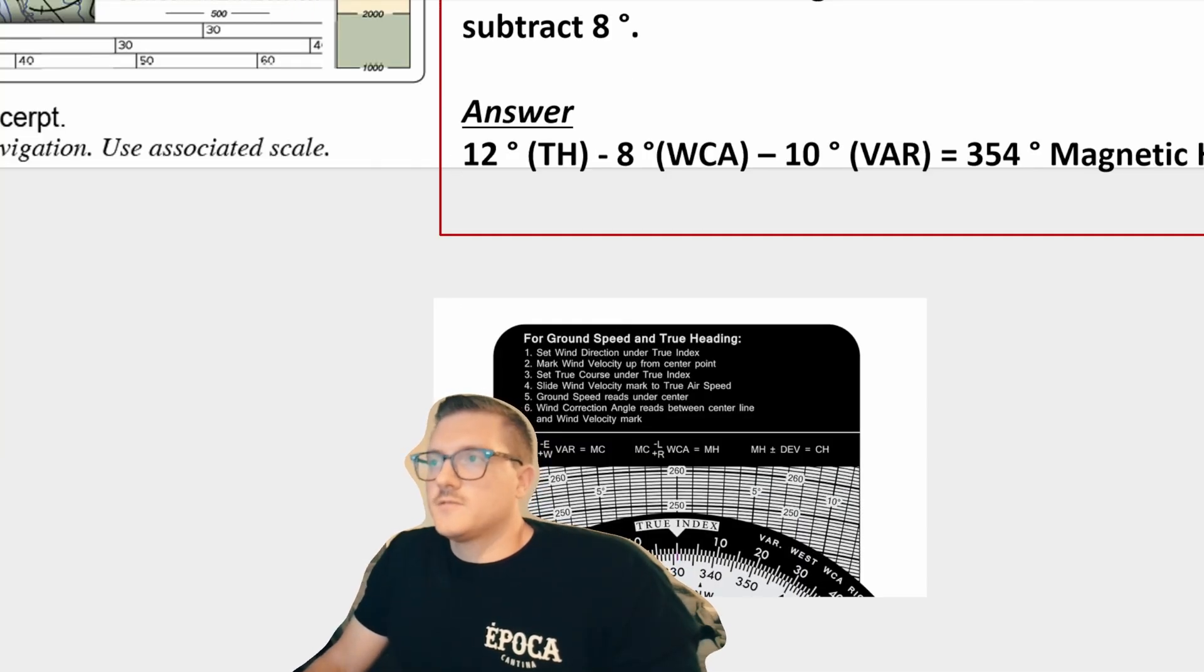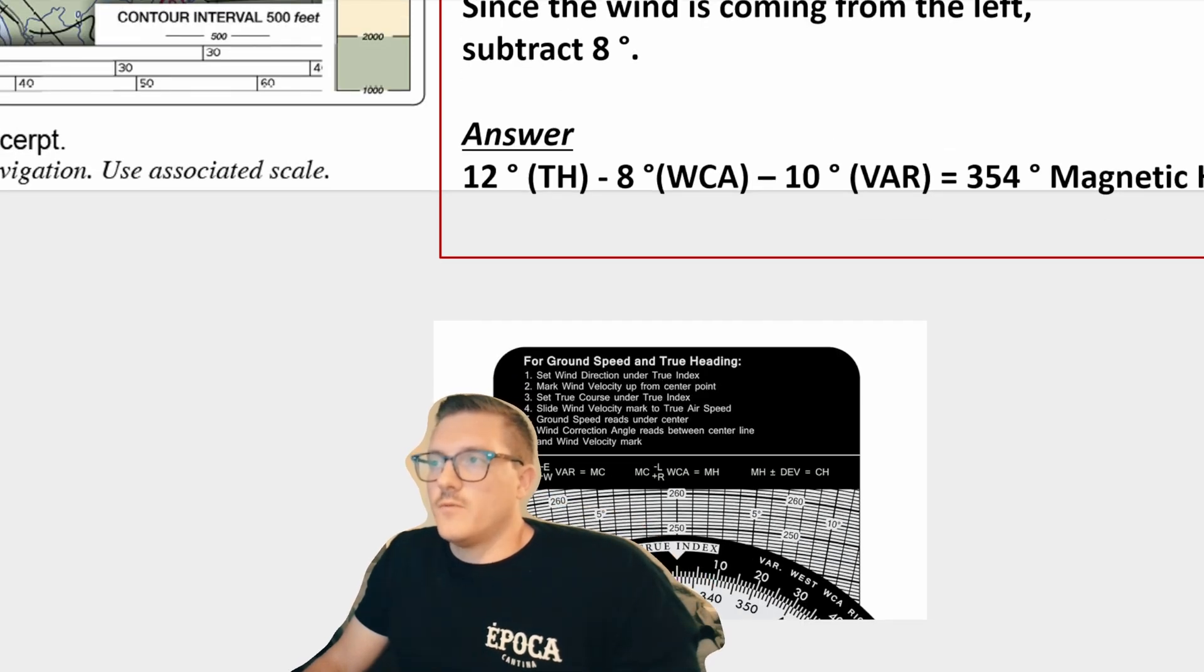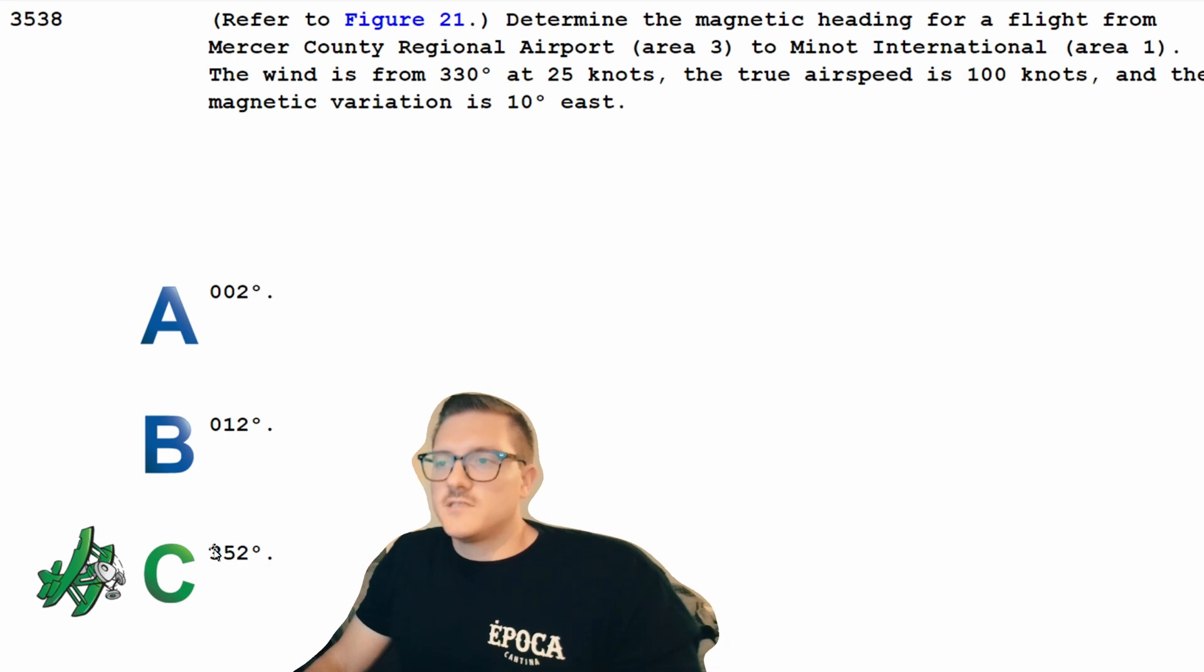So what I'm looking at is we have a true heading of around 12. We're going to subtract eight for the wind correction angle, and then we're going to subtract the 10 from the magnetic variation that they gave us in the question. So that should give us a magnetic heading of around 354. So looking back at the answers, we can see 352 is an answer. That's very close to our answer. I would be confident in selecting that as the correct answer.